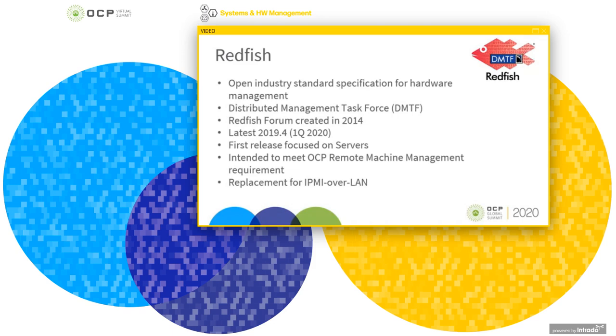Redfish is supported by roughly 30 paying companies broken into two tiers, and it is who you would expect in system management. Some of the same companies working on OpenBMC are also working on Redfish. The Redfish group was created in 2014 with the first spec released in 2015. Redfish started focused on just server management, but has grown.